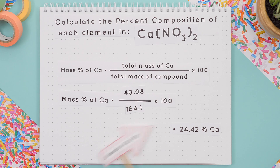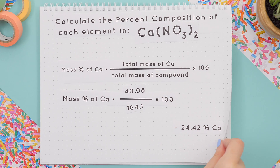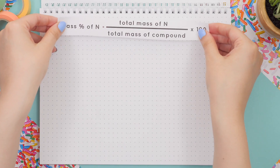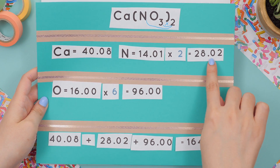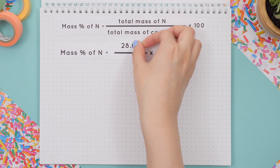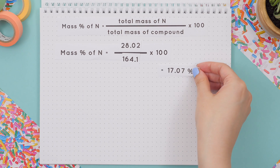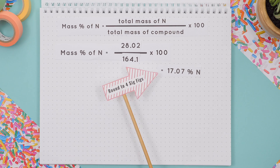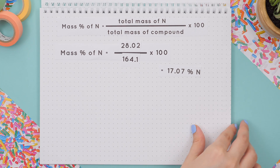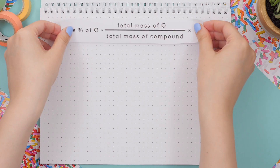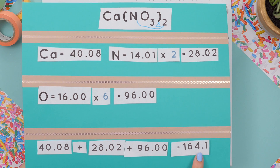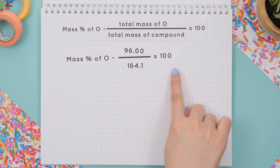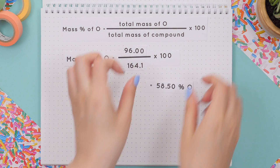We still need nitrogen's and oxygen's percent composition. We previously found the total mass of the compound and the total mass of nitrogen, so we'll plug that into our formula and get the percent composition of nitrogen rounded to four sig figs. We'll do the same thing for oxygen — divide the total mass of oxygen by the total mass of the compound, then multiply by 100.